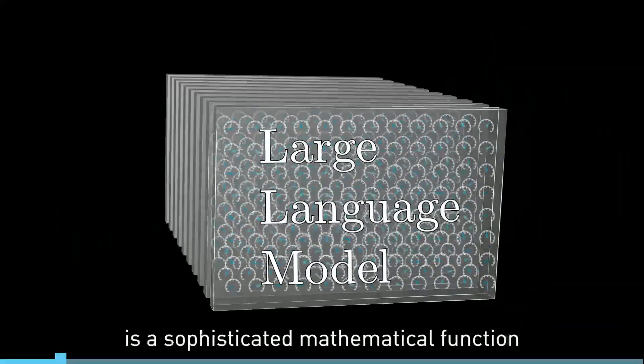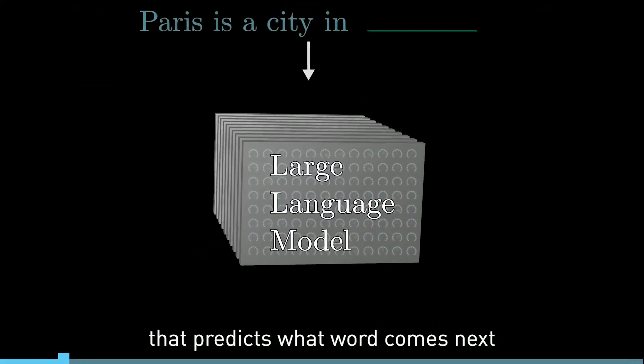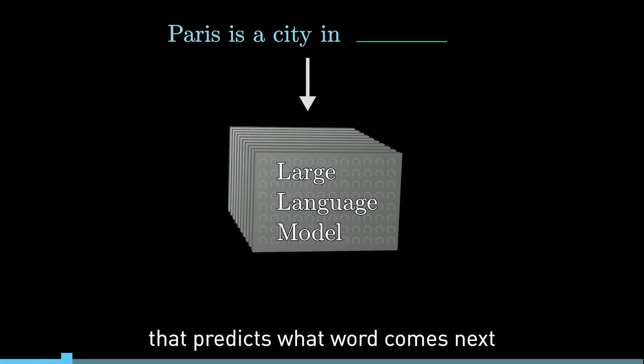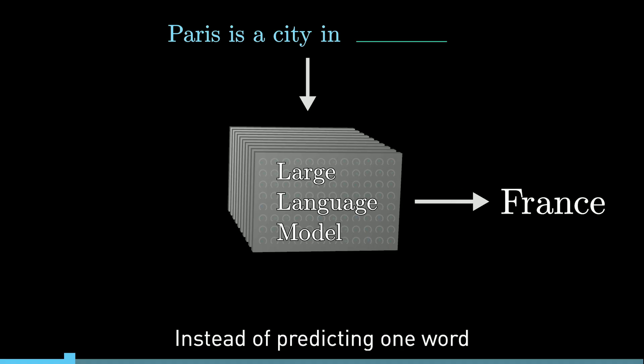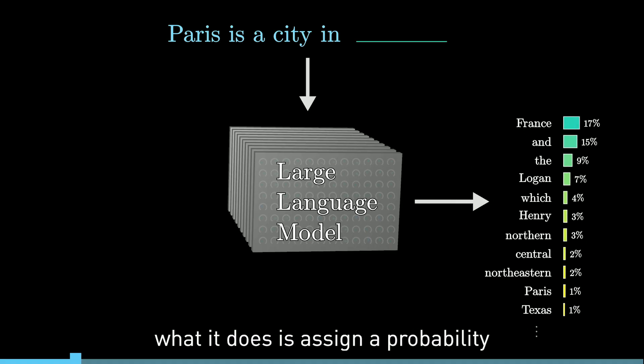A large language model is a sophisticated mathematical function that predicts what word comes next for any piece of text. Instead of predicting one word with certainty, though, what it does is assign a probability to all possible next words.